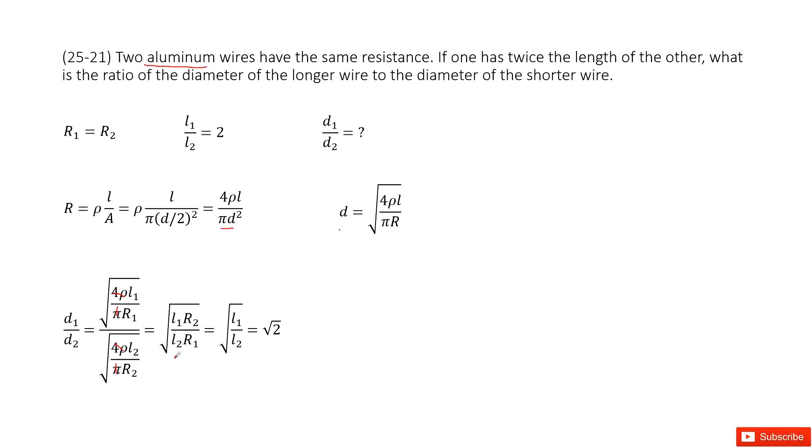In this function, since R1 equals R2, these terms cancel. Finally, you get the square root of L1 over L2. Input L1 over L2 as 2, and you get the final answer of square root of 2.